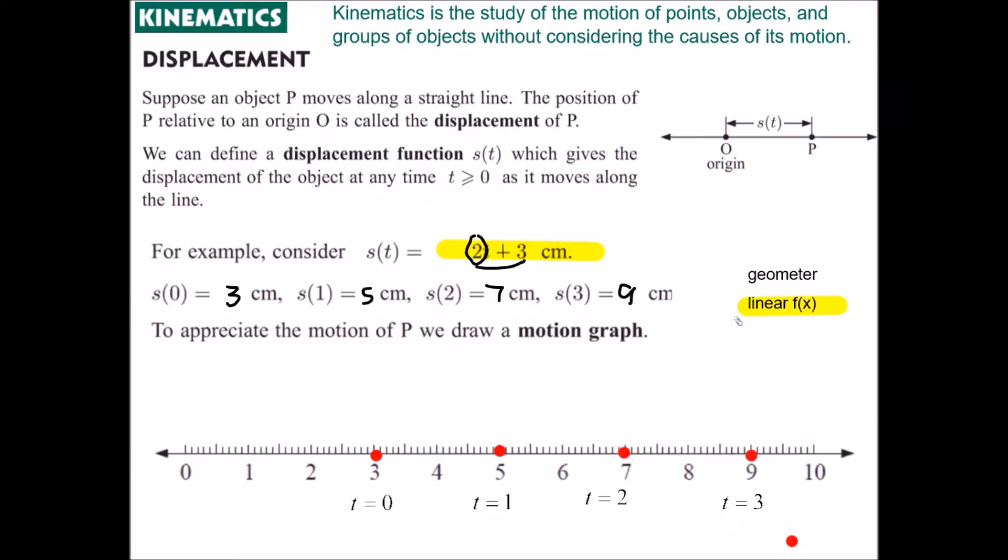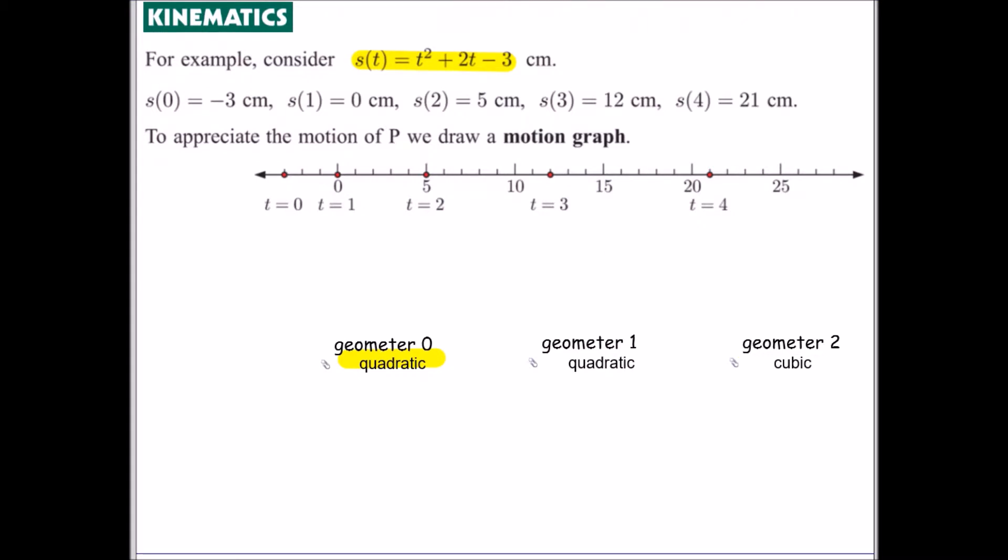So let's look at some other functions for our displacement. So here we have a quadratic function, and s(0) would be negative 3, s(1), plug in 1 here we get 1 plus 2 is 3, take 3 is 0. Then the other values 5, 12, 21. Notice that the change between these values is up by 3, up by 5, 7, and 9. And when your values change in increasing evens or odds, that's an indicator that we have a quadratic function, as we can tell from our equation here.